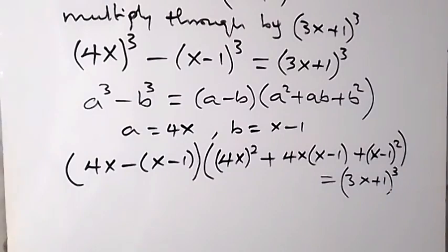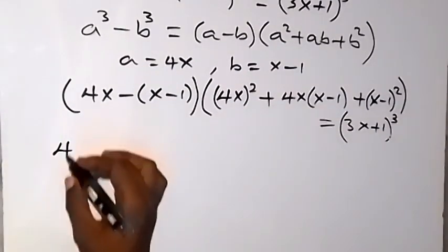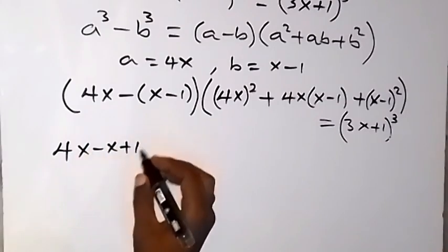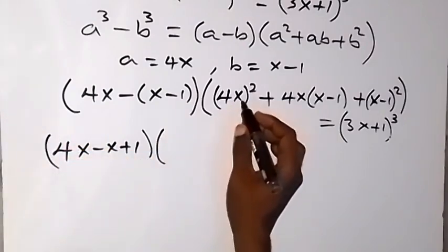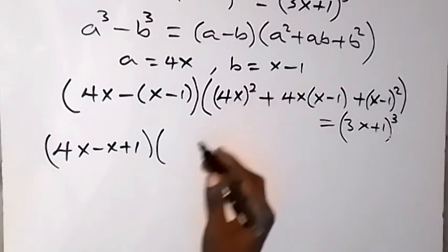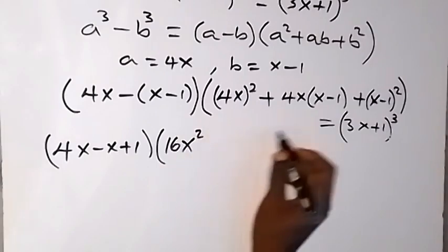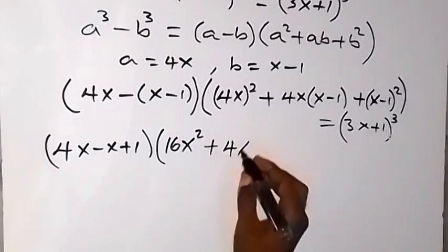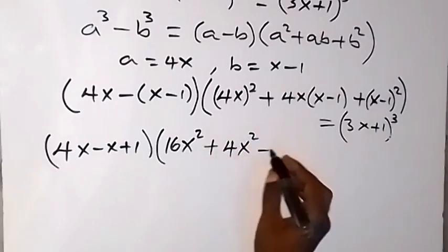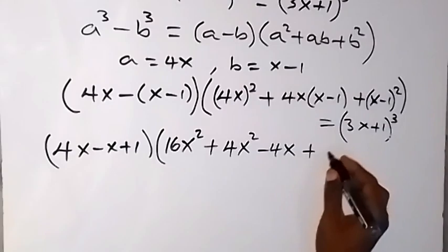Now we simplify. Opening the first bracket: 4x minus x plus 1, because minus times minus becomes plus, giving 3x+1. Opening the next bracket: 4x squared gives 16x², then 4x opens the next bracket giving plus 4x² minus 4x. Opening the last bracket gives plus x².